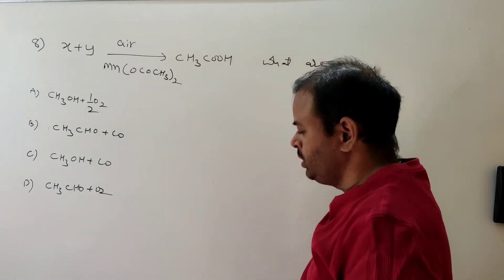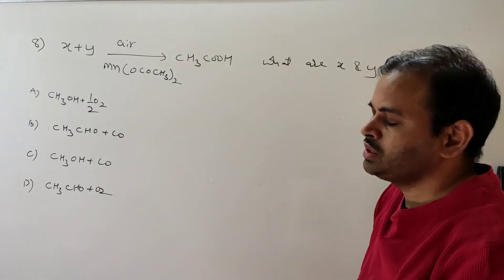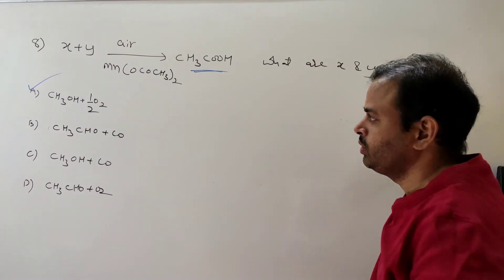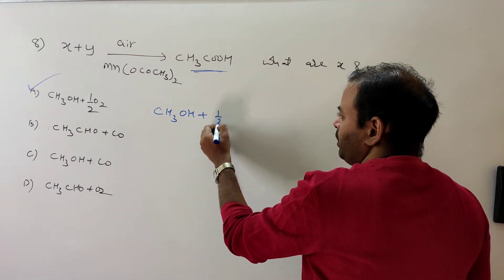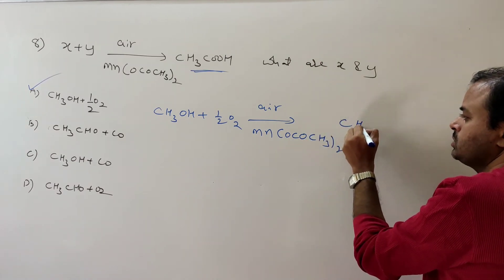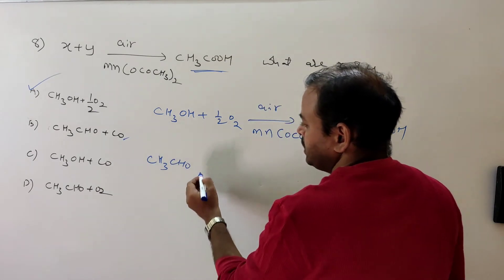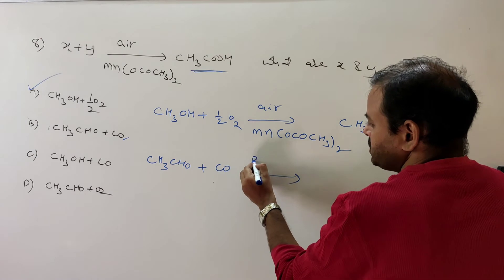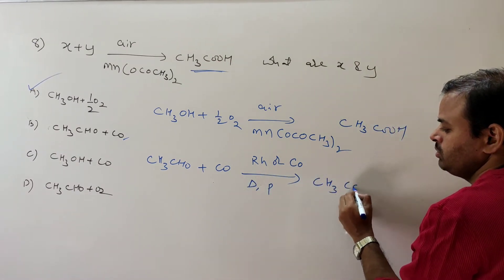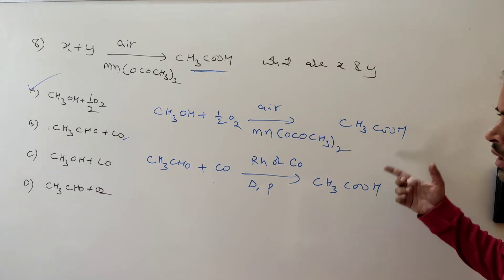Eighth question: X plus Y in presence of air and manganese acetate gives acetic acid. This is also a special preparation method for acetic acid. The answer is option A: CH3OH (methanol/alcohol) plus oxygen (air). In presence of manganese acetate Mn(OCOCH3)2, alcohol and oxygen react to give CH3COOH. Comparing with question seven: seventh used aldehyde and CO, eighth uses alcohol and oxygen — both give acetic acid.